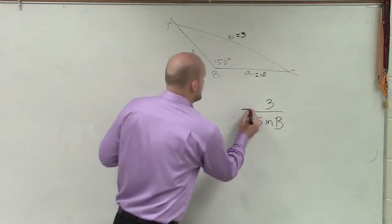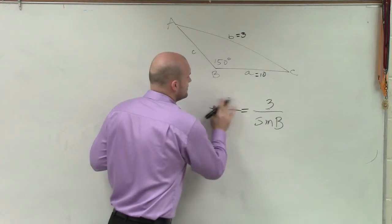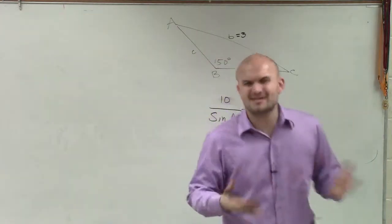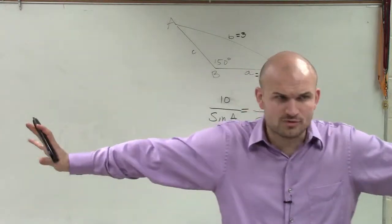So I'm going to say, well, then, A is 10 over the sine of A. You don't always have to write all those proportions.